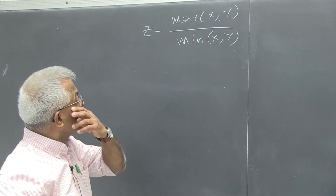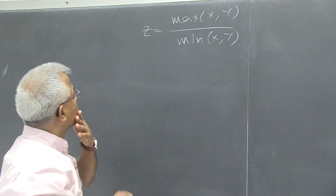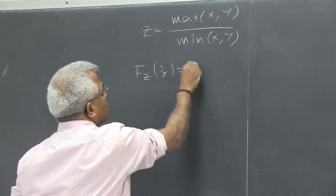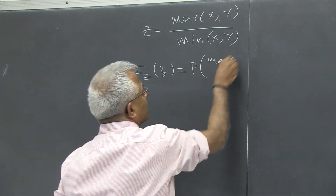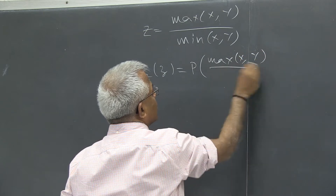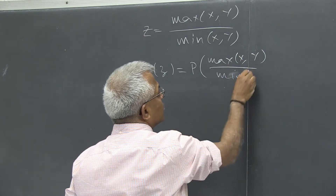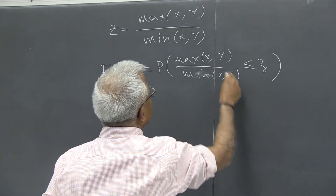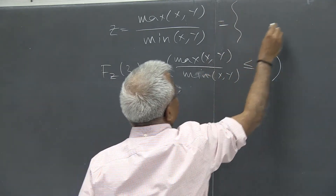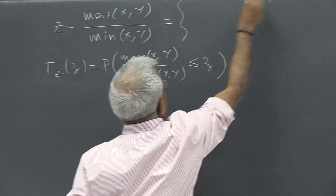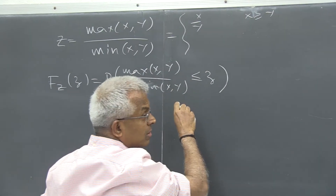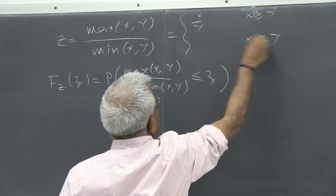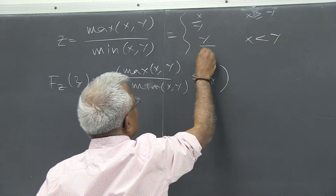We can look at this random variable maximum over minimum. The distribution function of Z is the probability of max(X,Y) over min(X,Y) less than or equal to z. When X is greater than Y, this is X over Y, and when X is less than Y, this will be Y over X.